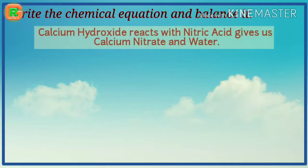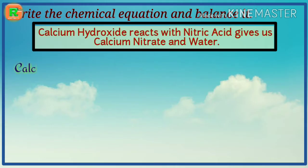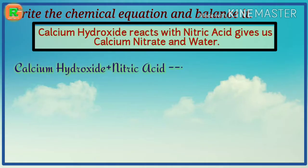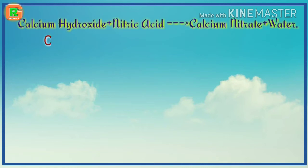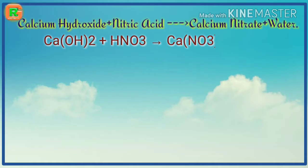Write and balance the chemical equation: calcium hydroxide reacts with nitric acid to give calcium nitrate and water. The equation is: calcium hydroxide plus nitric acid gives calcium nitrate plus water. Writing the chemical formulas: Ca(OH)₂ + HNO₃ → Ca(NO₃)₂ + H₂O.